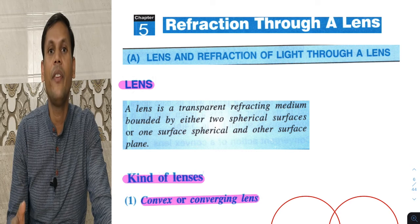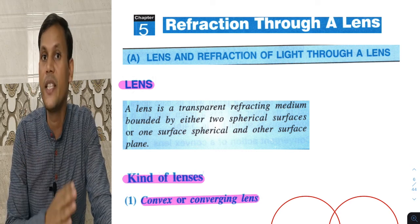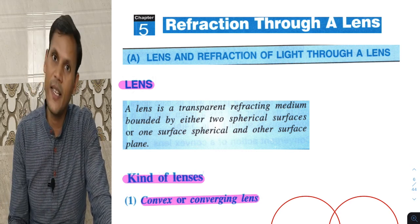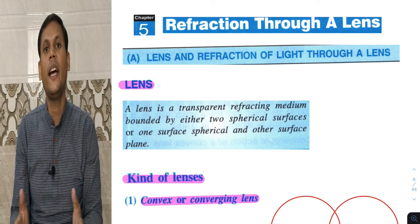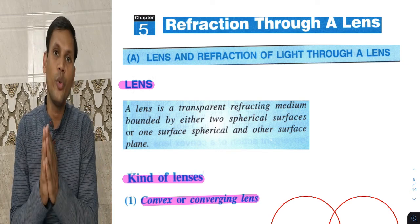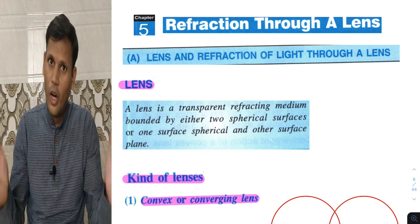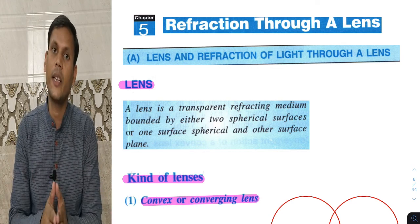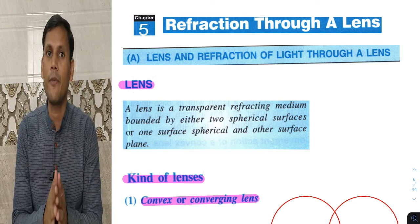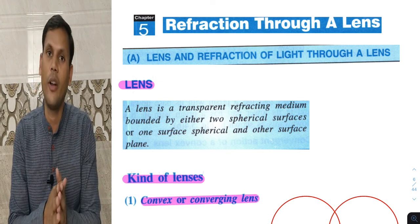We have to learn about lenses. We know that lenses are of two types — basically two types. One is convex lens and the other is concave.